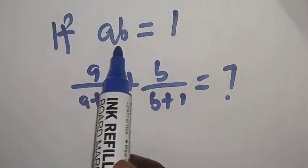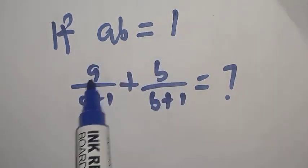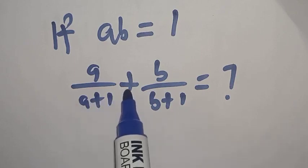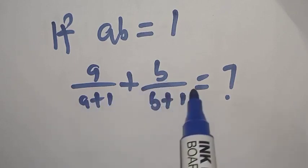The question says: if AB is equal to 1, then A over A plus 1 plus B over B plus 1 is equal to what?